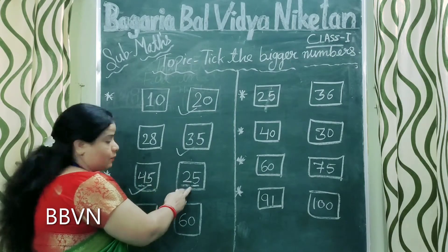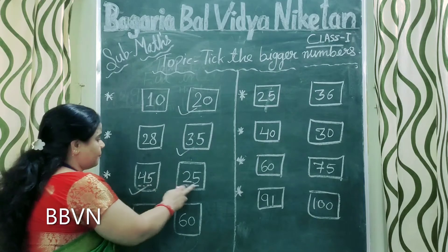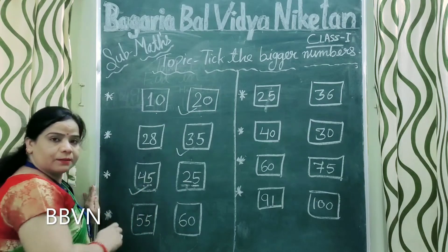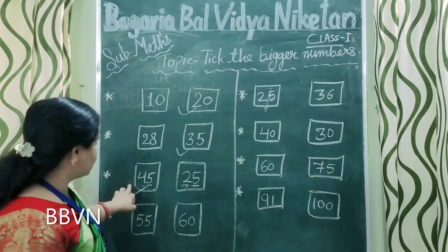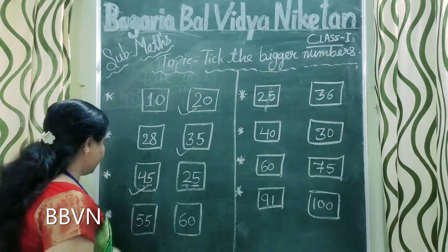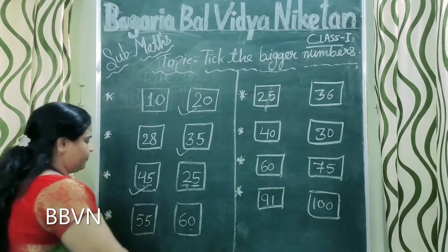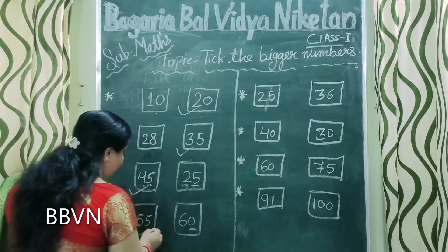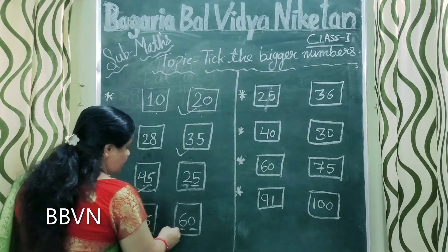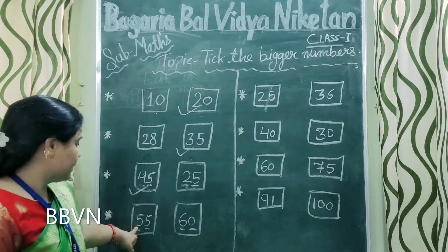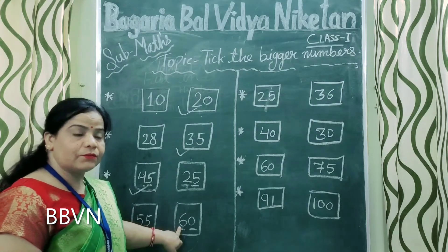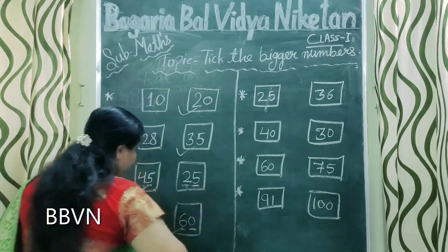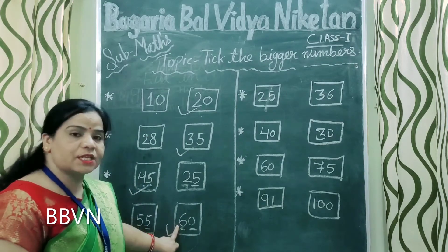Toh four bada hai, toh ye bigger number hai, because ones ki place mein toh five five hai — same. Aur tens ki place pe yahaan four hai, yahaan two hai — toh two small hai, four big hai. Toh aapka automatically find ho gaya ki this is the bigger number. Next, here sixty and here fifty five. Ones place pe yahaan zero hai, aur ones place pe yahaan five hai. Tens place pe yahaan six hai, aur tens place pe yahaan five hai. Six bigger hota hai — toh sixty is the bigger number.